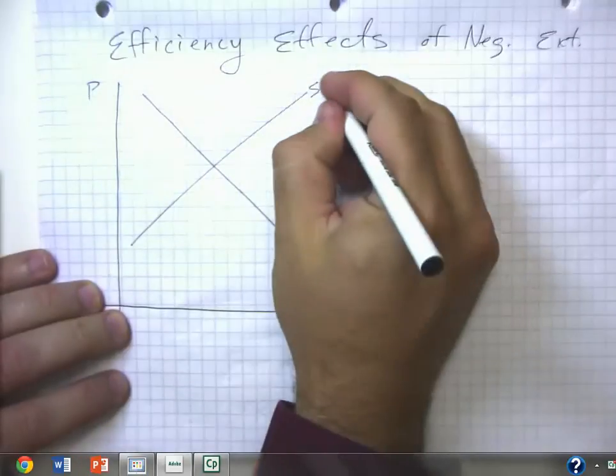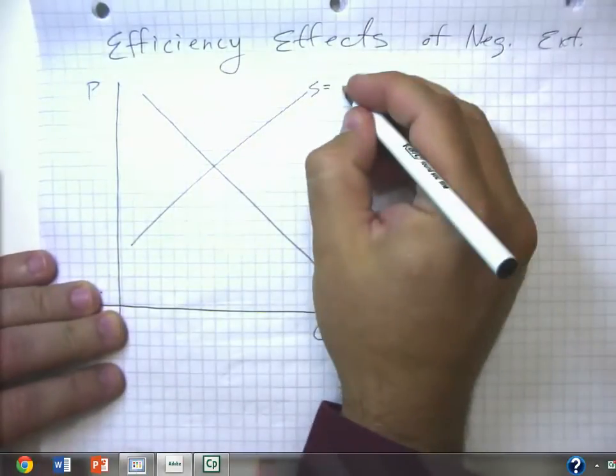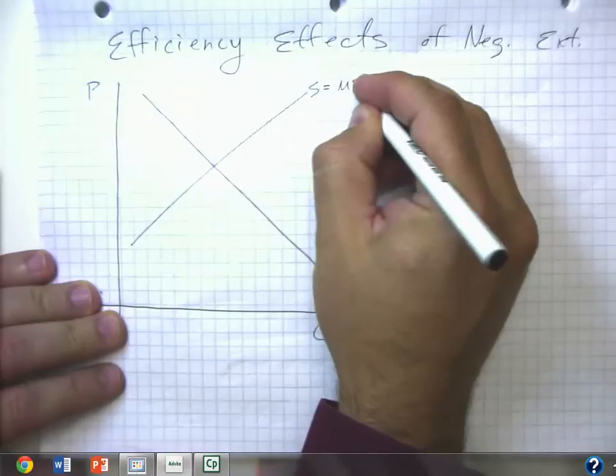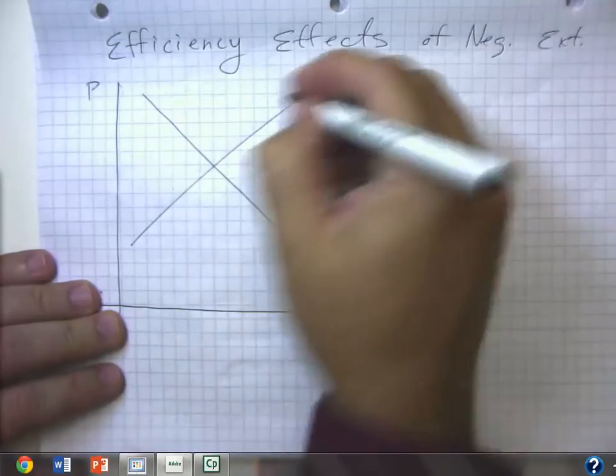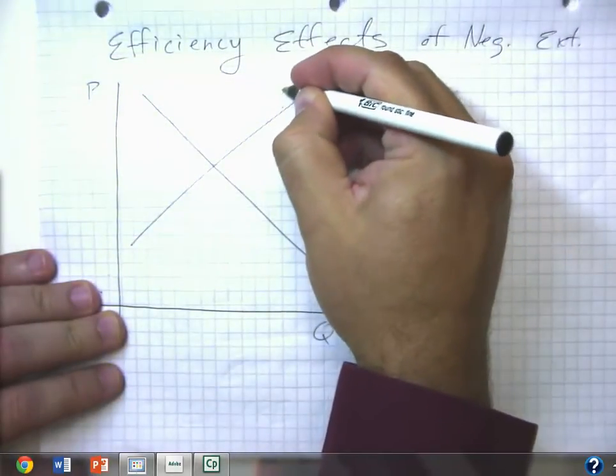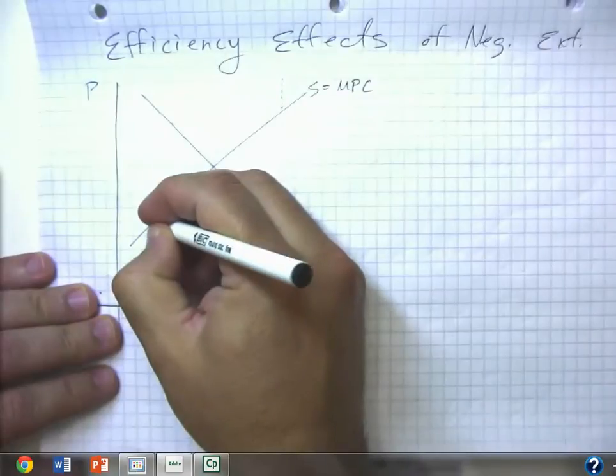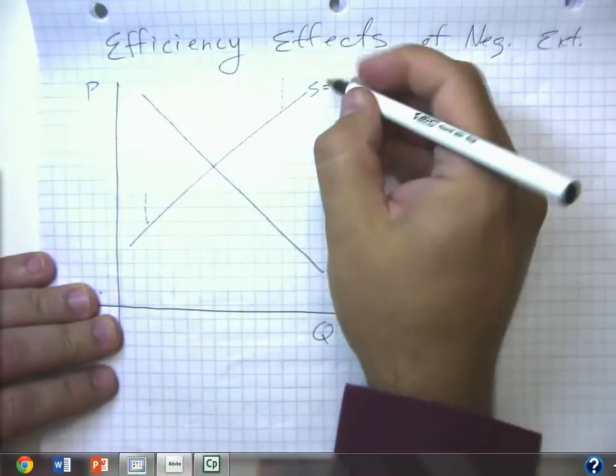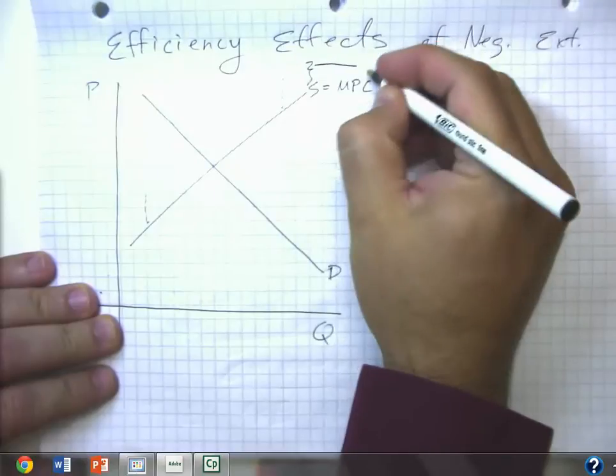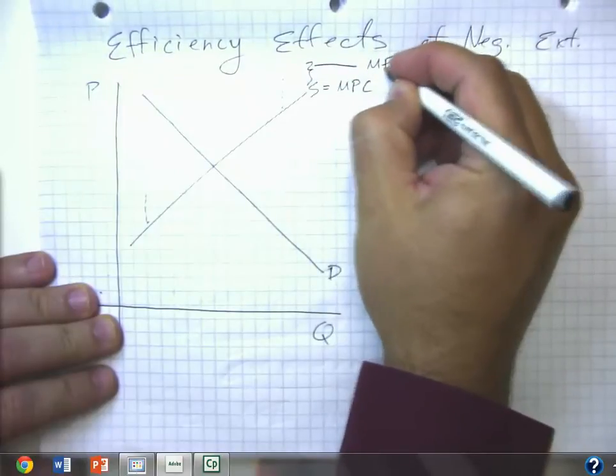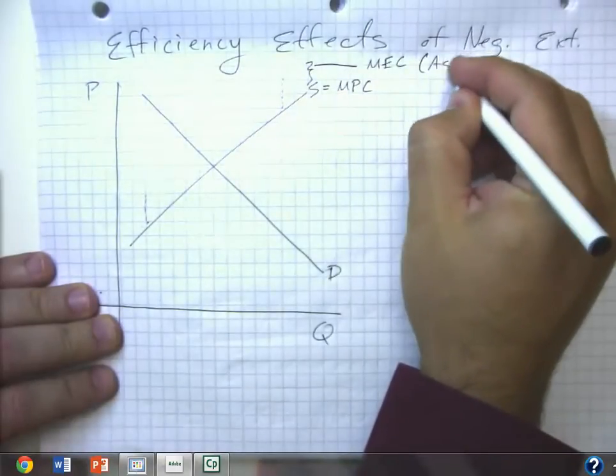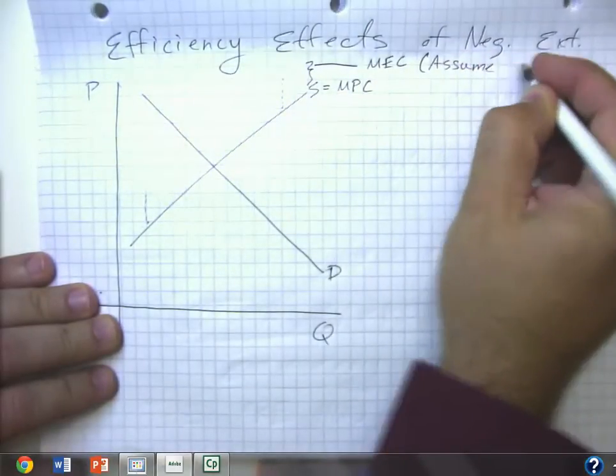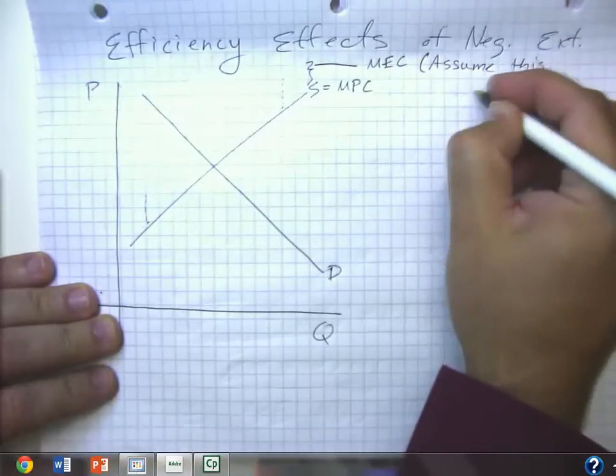Remember that ordinarily the supply curve comes from marginal private cost. But we know that if we have a negative externality, then let's suppose it's two squares high. That's the amount here of the marginal external cost per unit. And we're assuming for now this is constant.